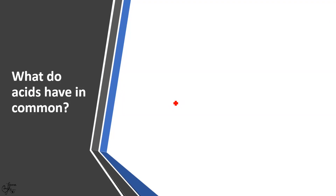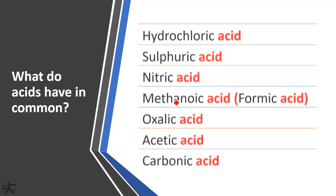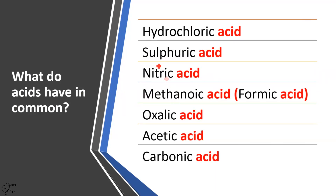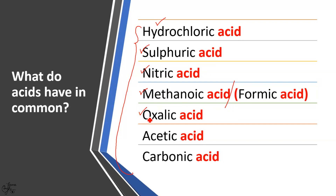For this, let us write the names of a few commonly known acids we've already come across in my previous videos on this chapter. In case you missed that, you can find it by clicking the links in the description box below. So we have hydrochloric acid, sulfuric acid, nitric acid, methanoic acid also known as formic acid present in red ants, oxalic acid in tomatoes, acetic acid in vinegar, and carbonic acid in your soft drinks.